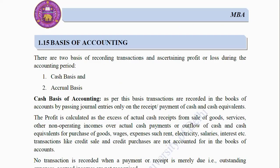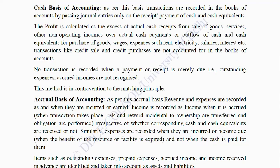Basis of Accounting: There are two bases of recording transactions and ascertaining profit or loss during the accounting period: (1) Cash Basis and (2) Accrual Basis. Cash Basis of Accounting: As per this basis, transactions are recorded in the books of accounts by passing journal entries only on the receipt or payment of cash and cash equivalents. Profit is calculated as the excess of actual cash received from sale of goods, services and other non-operating income over actual cash payments for purchase of goods, wages, rent, electricity, etc. Credit sales and credit purchases are not accounted for. No transaction is recorded when a payment or receipt is merely due — that is, outstanding expenses and accrued incomes are not recognized. This method is in contravention to the matching principle.